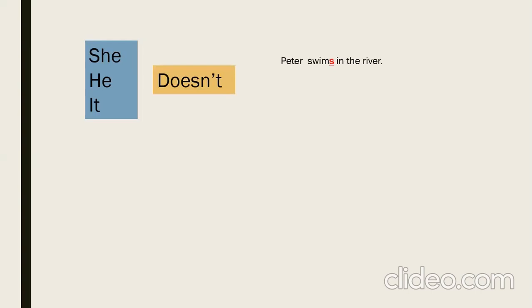For example: Peter swims in the river. As we can see, the verb 'swims' is in the third person — it has an 's'. But when we add 'doesn't', we remove that 's' from the verb. So it becomes: Peter doesn't swim in the river.